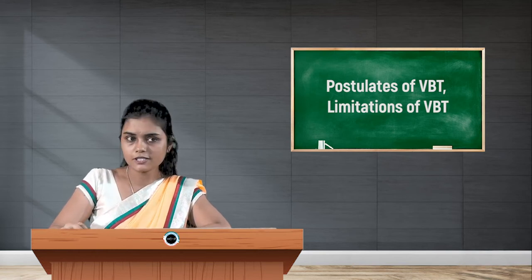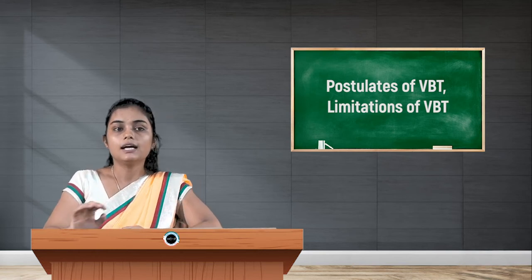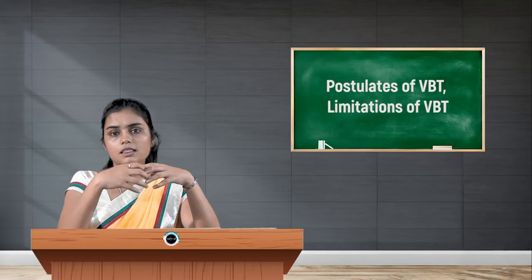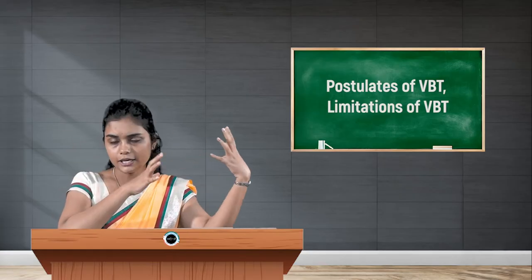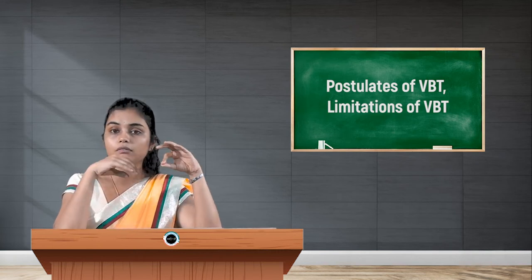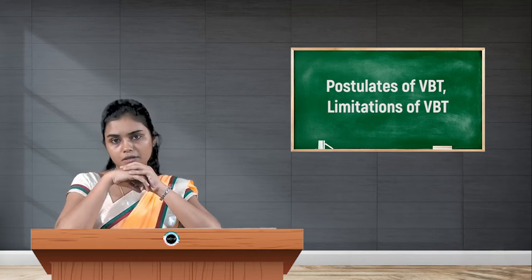The first postulate of VBT is that the central metal ion in the complex makes available an adequate number of empty orbitals for the formation of coordinate bonds with suitable ligands, and that number is always equal to the coordination number of the central metal ion. So the number of ligand orbitals that can be accommodated in the coordination sphere purely depends on the coordination number.